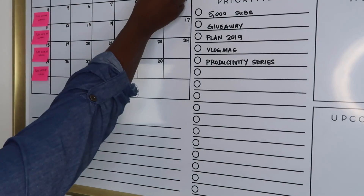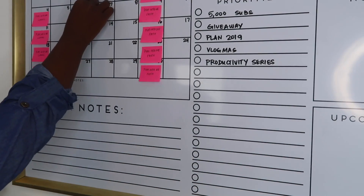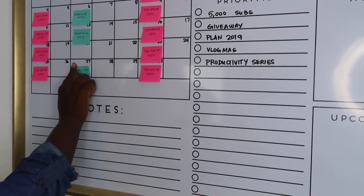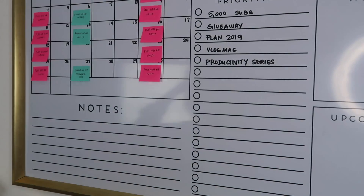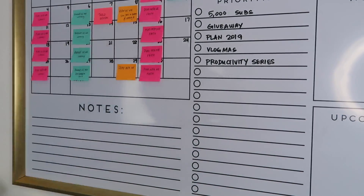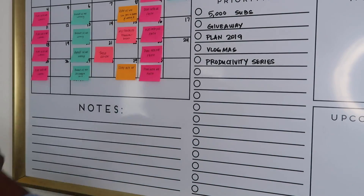So now I'm adding everything onto my actual board. I'm just moving the sticky notes around, trying to see exactly where I want to film certain videos and what will work for my exact schedule.